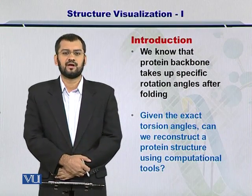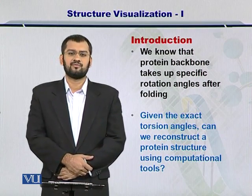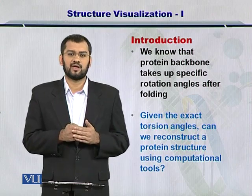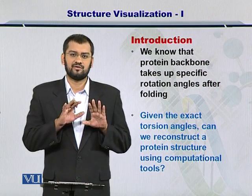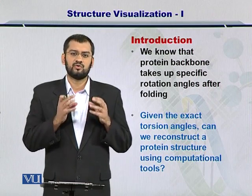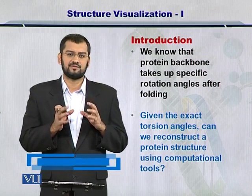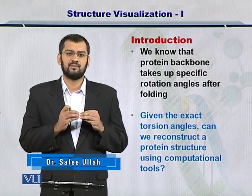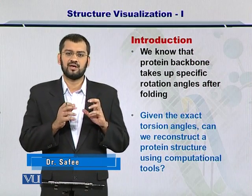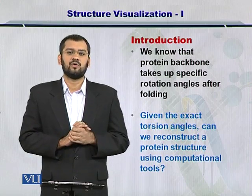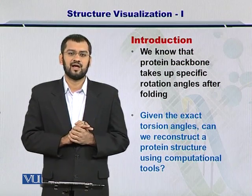Multiple amino acids come together to make a protein, held by peptide bonds that are planar and rigid in nature. Two such peptide bond planes are linked by an alpha carbon. So if these two planes can rotate, they can take phi or psi angles depending on which dihedral angle you look at.